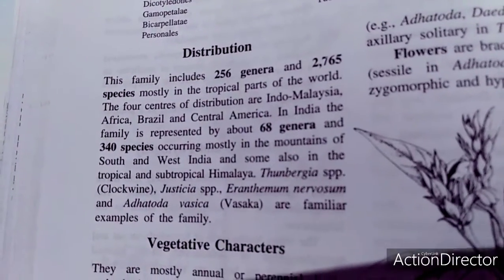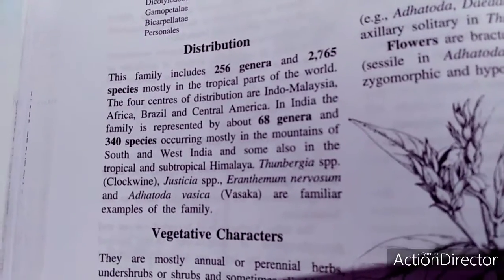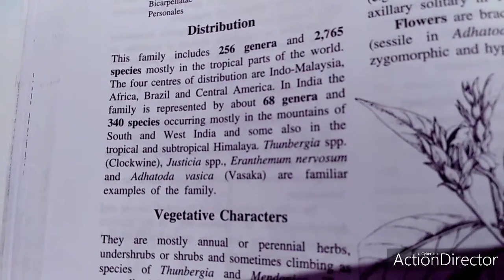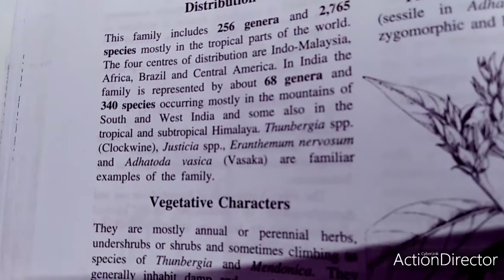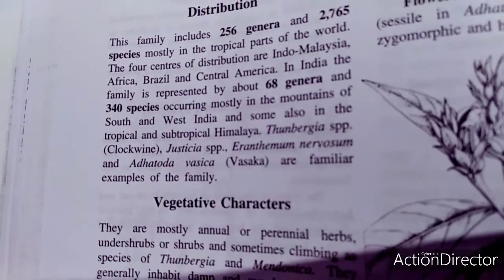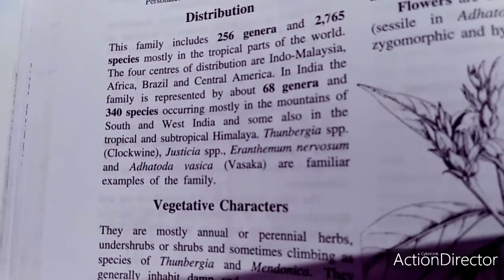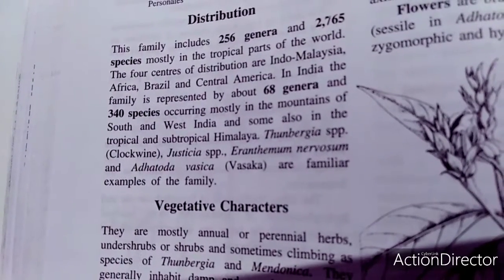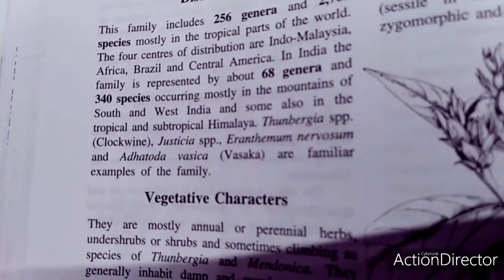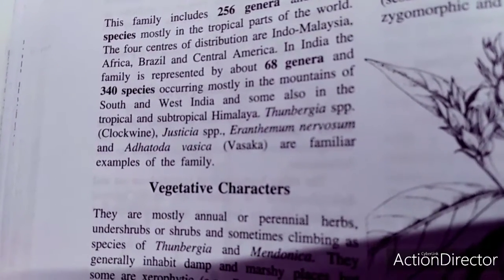256 genera and 2765 species have been recognized in the tropical part of the world. The four centers of distribution are Indo-Malaysia, Africa, Brazil, and Central Africa. In India, the family is represented by 68 genera and 340 species.